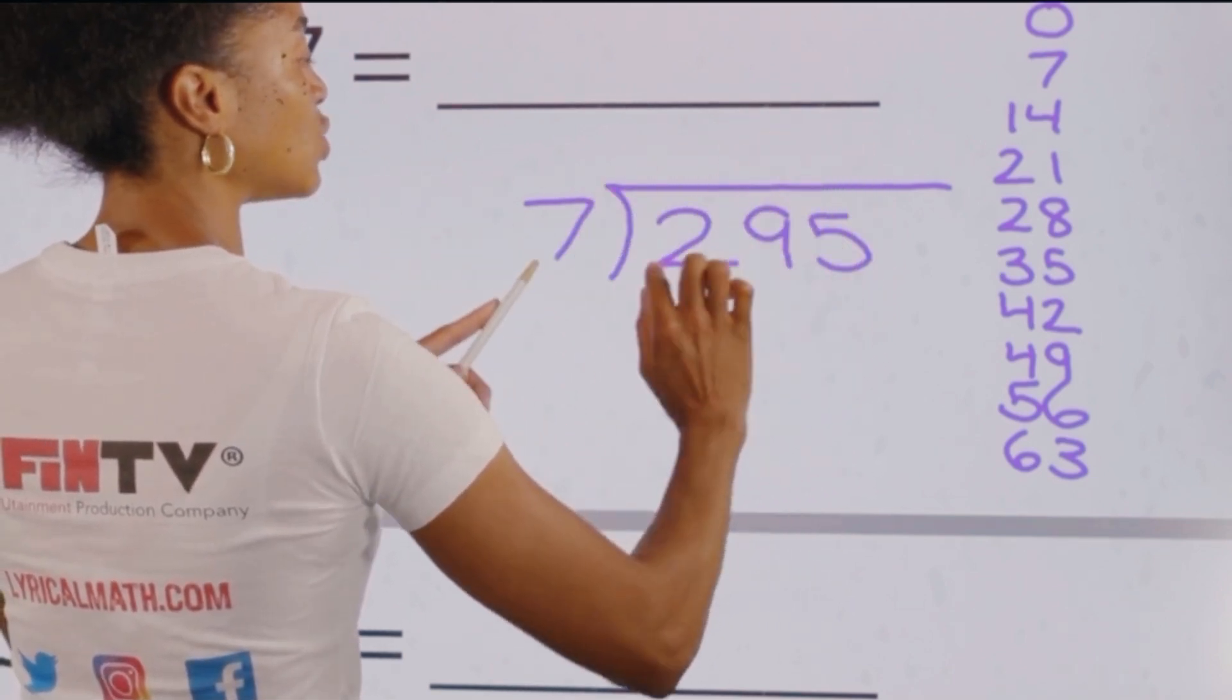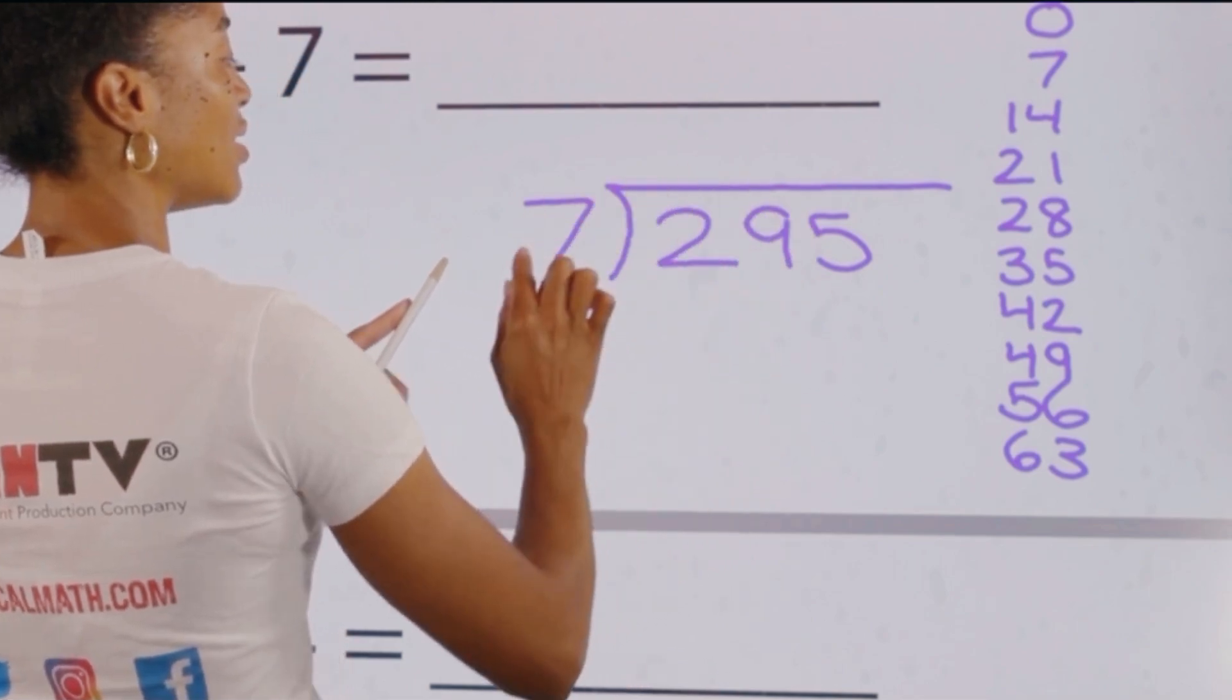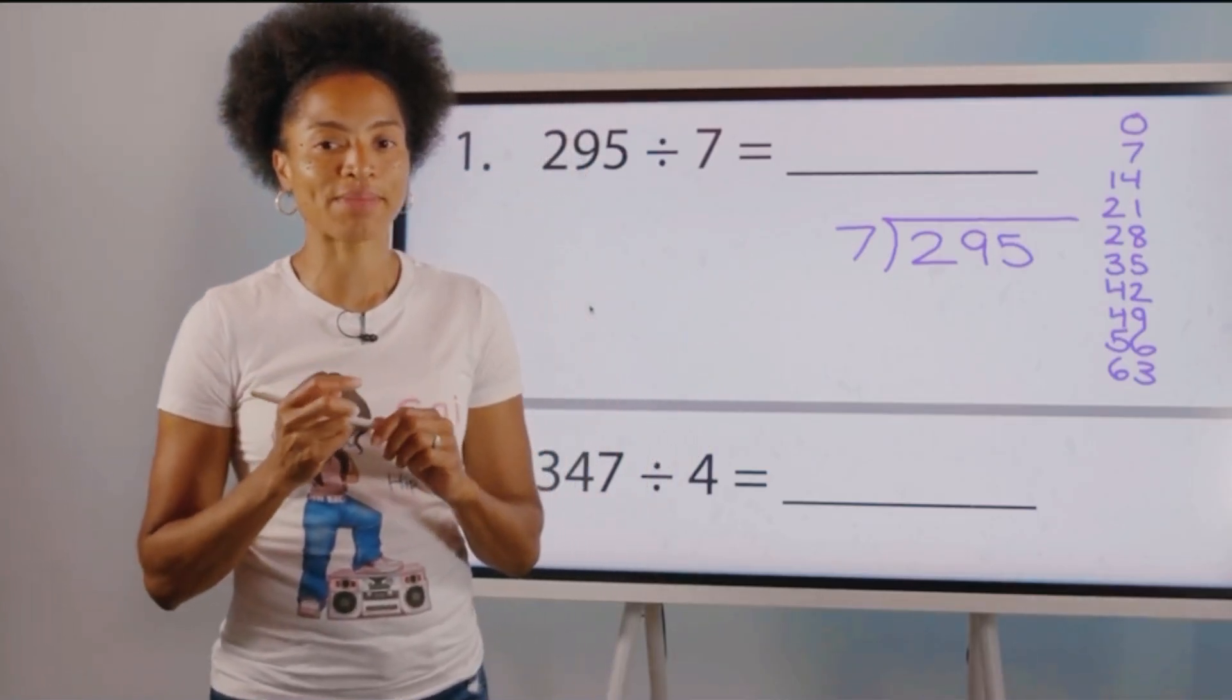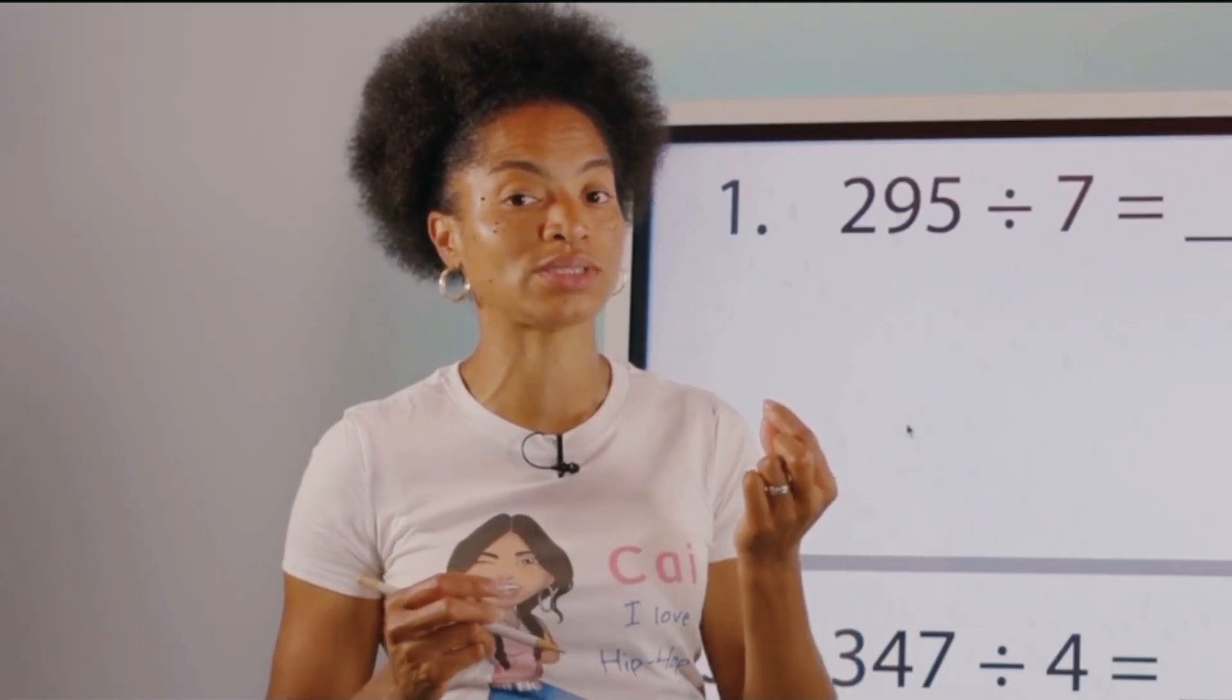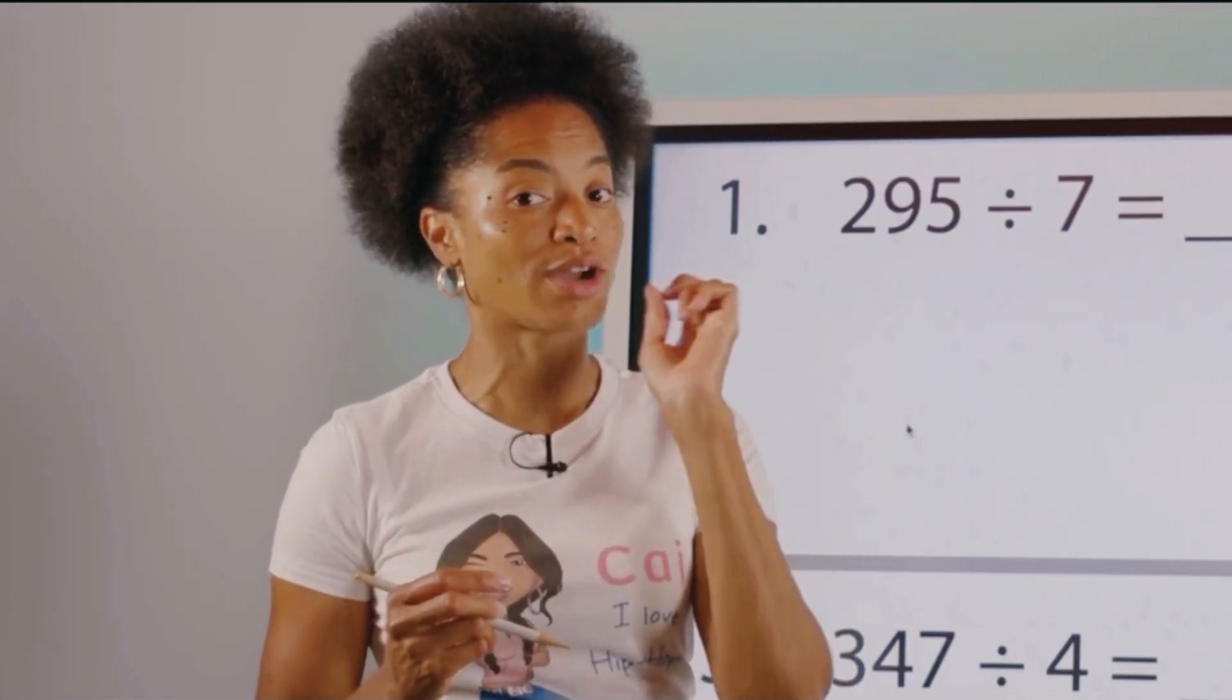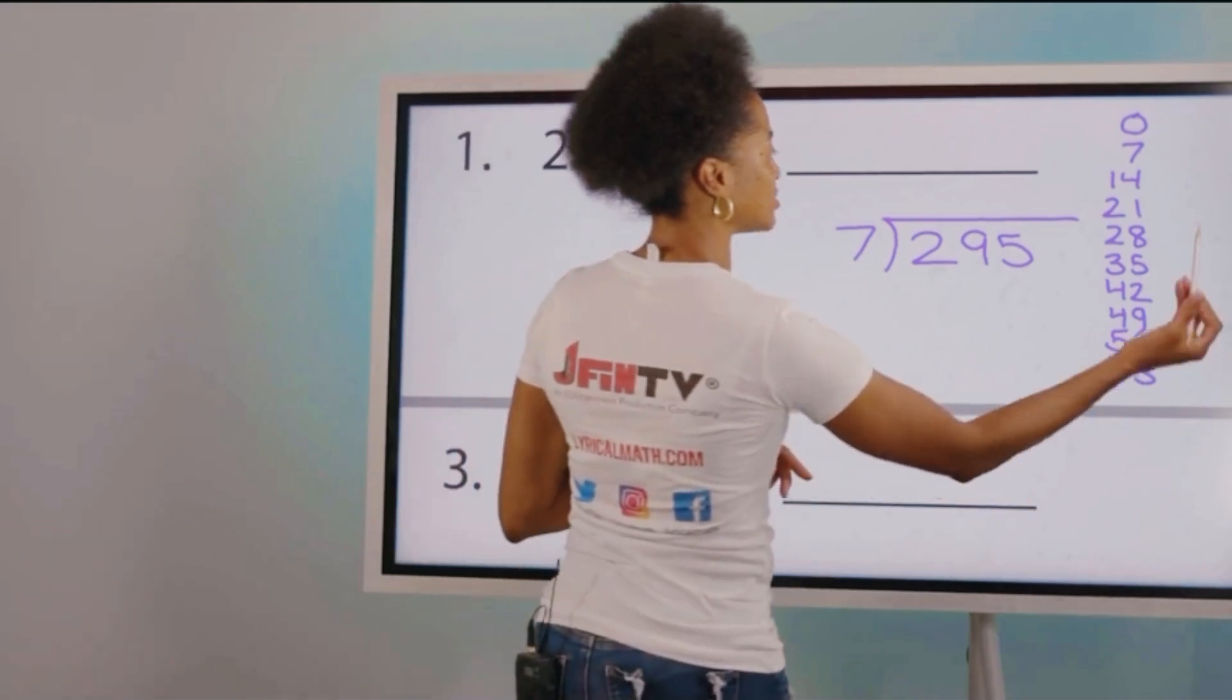That means we're going to start with 29 divided by 7. What does that mean? Go down your list, do not pass 29. We can stop at 29 if we see it, we just can't pass it. Alright, we would then end up stopping where? 28.